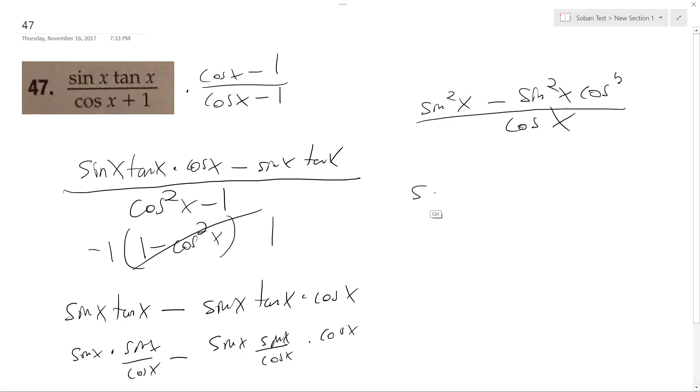Basically, on top, it becomes 1 minus cosine squared x minus 1 minus cosine squared x times cosine x.